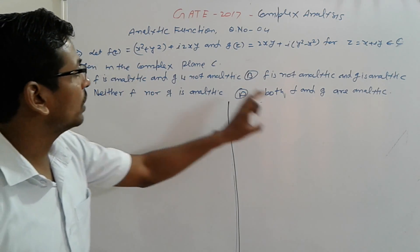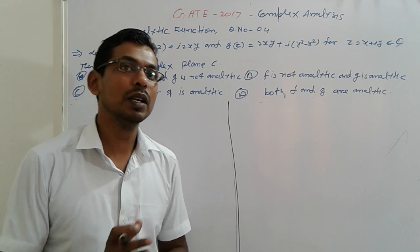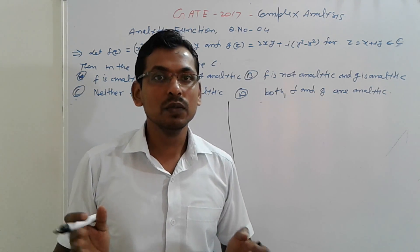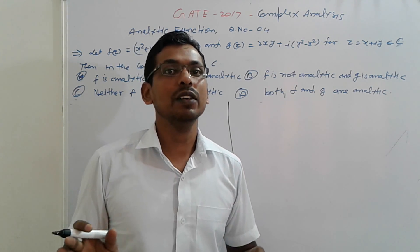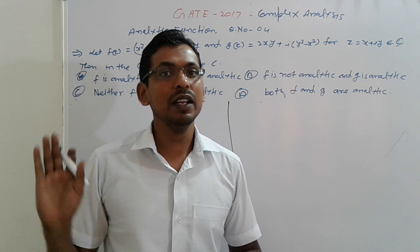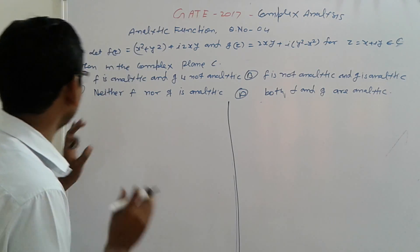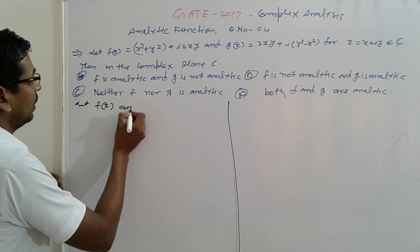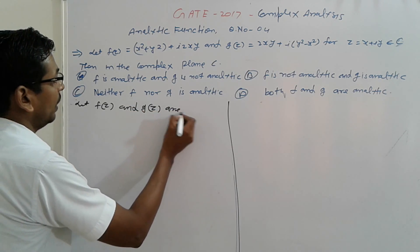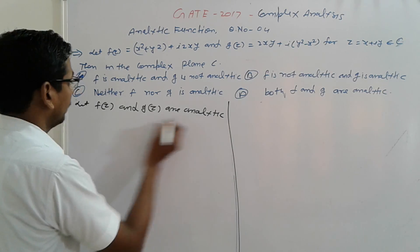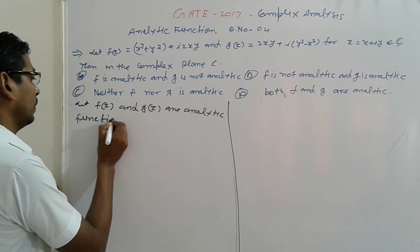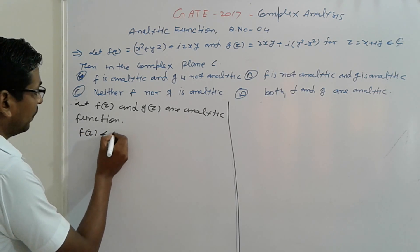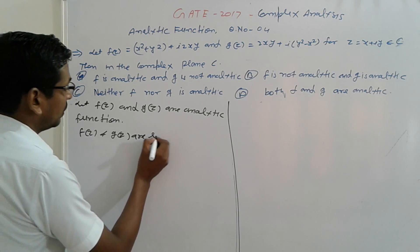Two functions are given, so check out if they are analytic or not. Suppose we assume that a function is analytic. In that case, the function satisfies the CR equations — the Cauchy-Riemann equations. Similarly, we take: let f(z) and g(z) are analytic functions, so it means f(z) and g(z) satisfy the CR equations.